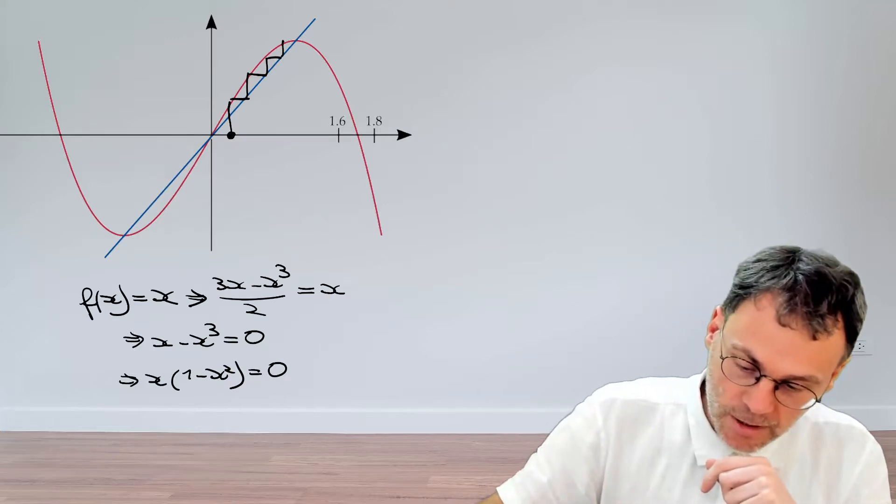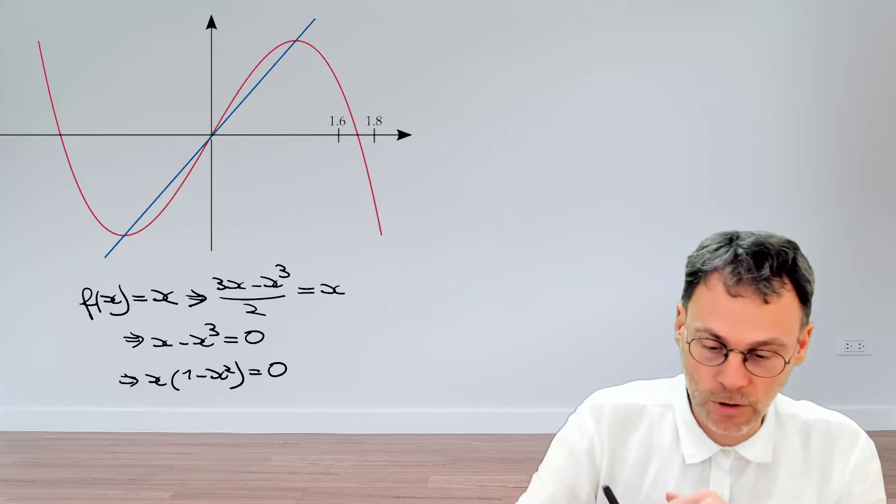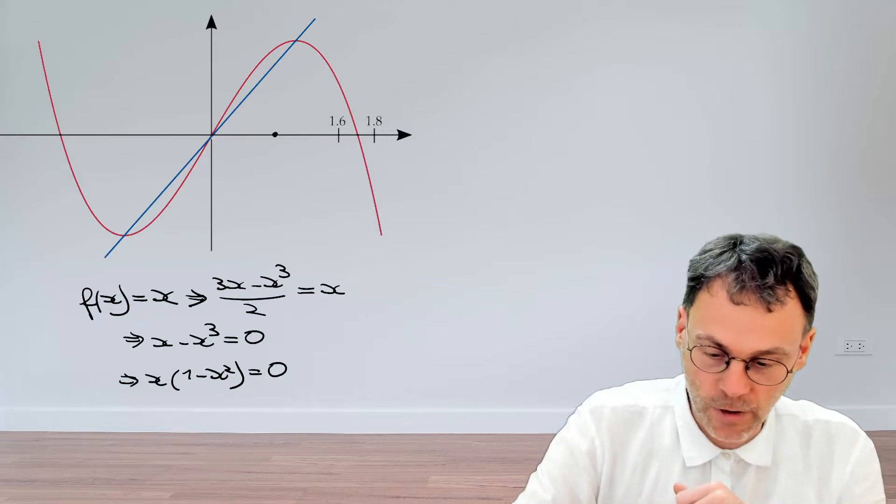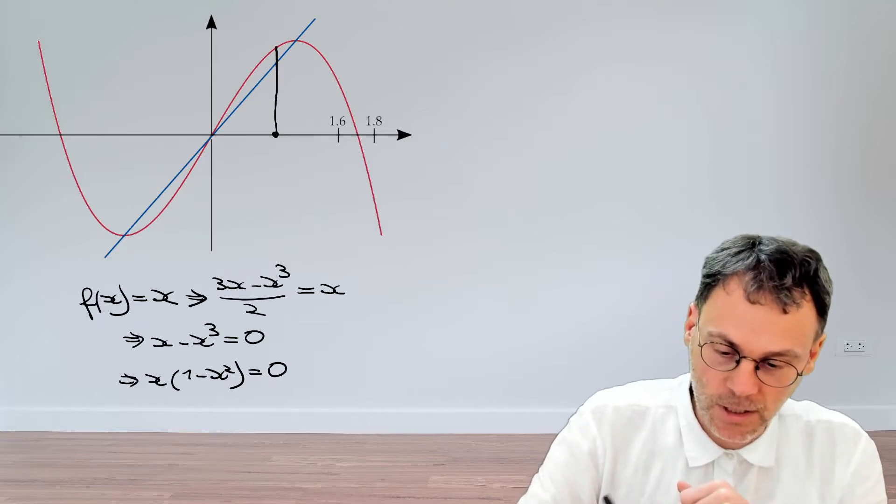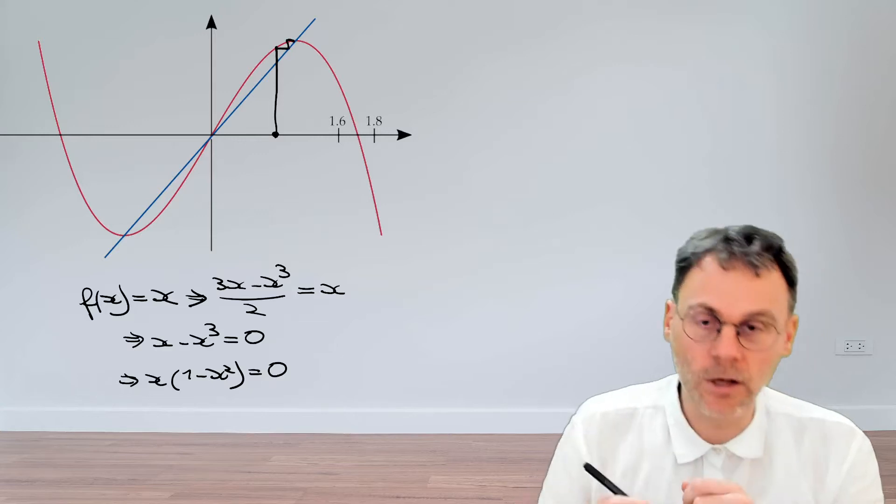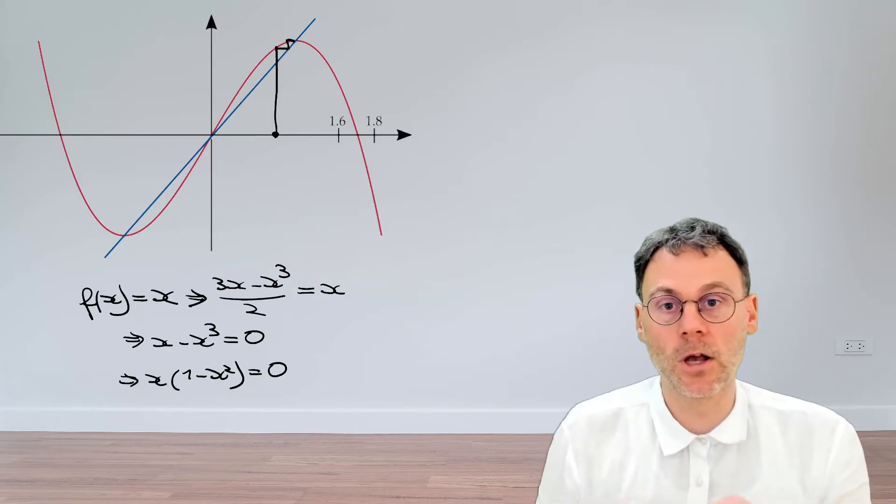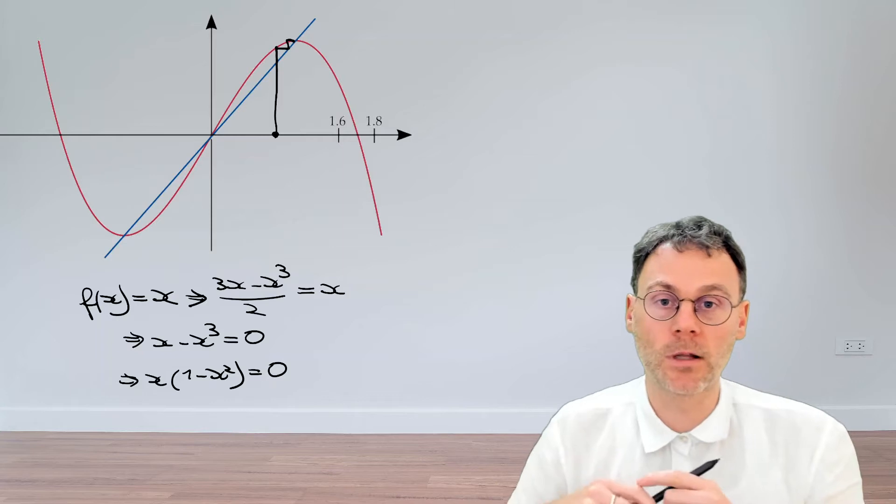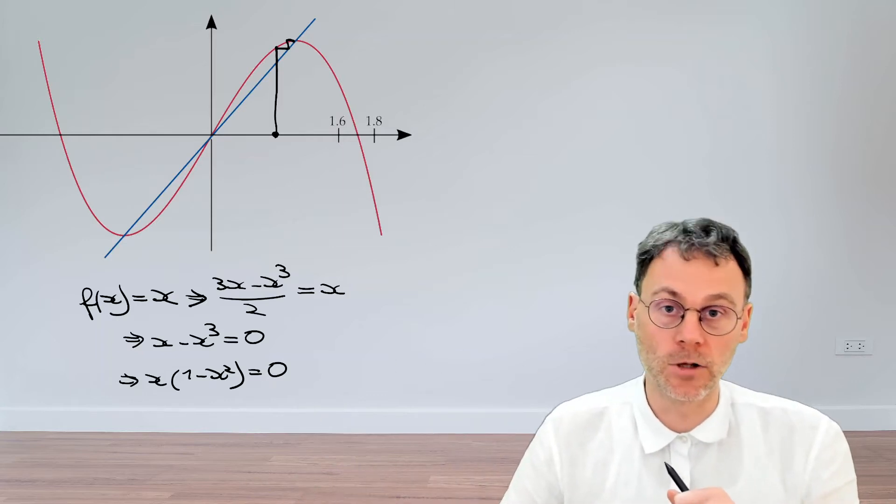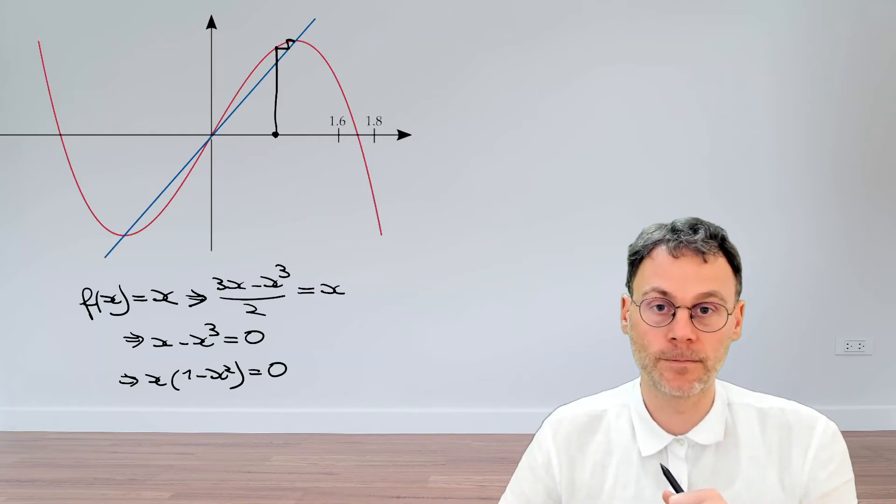On the other hand, if you start very close to the other fixed points, say over here for example, you see that you converge to that fixed point. So minus 1 and plus 1 are stable fixed points, while the origin is an unstable fixed point.